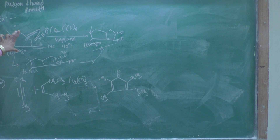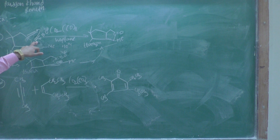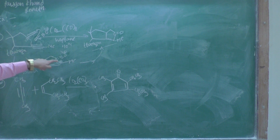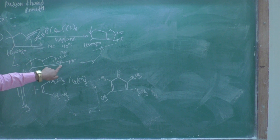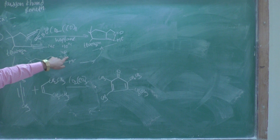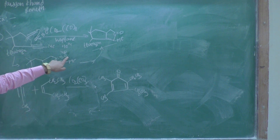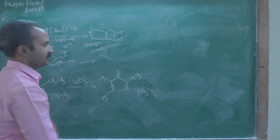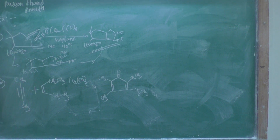Your product is formed: take C triple bond O, the carbon containing the negative charge attacks this carbon atom, pi bond forms, the negative charge attacks this carbon atom, the oxygen positive charge is neutralized, and your product is formed. This is the first example of the Pauson-Khand reaction.